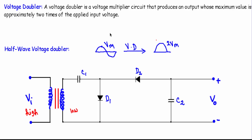The idea of a voltage doubler circuit is this: if I have a sinusoidal voltage with maximum value Vm and pass it through a voltage doubler circuit, in the output I will get an unidirectional voltage whose value will be two times the maximum value of the input voltage. The input voltage has a peak value of Vm, but in the rectified output I have a voltage value of 2Vm — the voltage gets doubled, which is why it is known as a voltage doubler circuit.